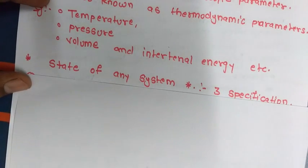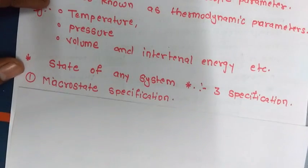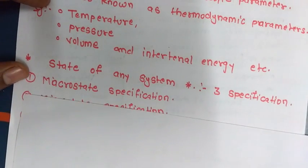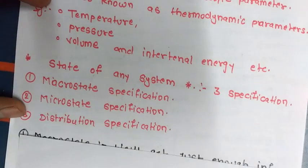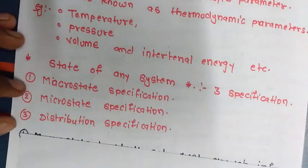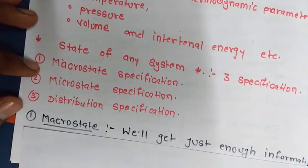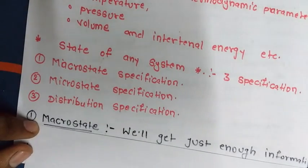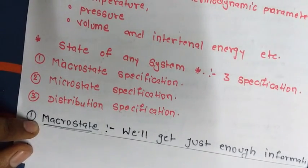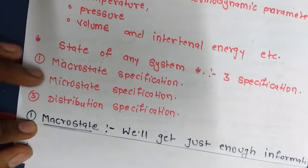Now let's talk about the macrostate and microstate. If there is any system, to specify the state of any system, there are three specifications: the macrostate specification, microstate specification, and distribution specification.